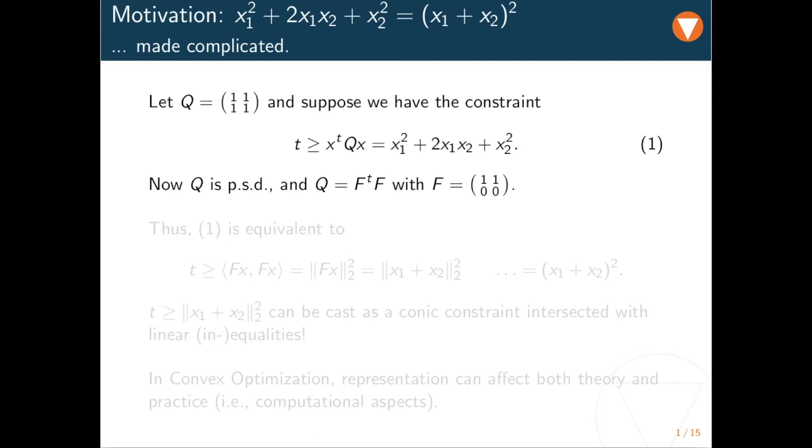And now if we plug that in for Q and manipulate a bit, we see that not only we get our initial claim, but also we get something that says t should be greater or equal than the squared Euclidean norm of something. And whenever you see such a construct, it can be cast as a conic program, and we'll see details about that later on.